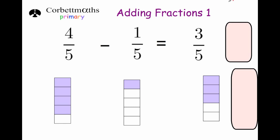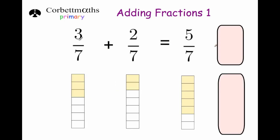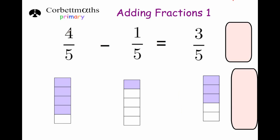As you can see, whenever we're adding and subtracting fractions with the same denominators, it's quite simple. If I've got one third plus one third, I just add the numerators together — one plus one is two — and I keep the denominator the same. For three sevenths plus two sevenths, I just add the numerators and keep the denominator the same. For subtraction, I just take the numerators away from each other — four minus one is three — and keep the denominator the same.